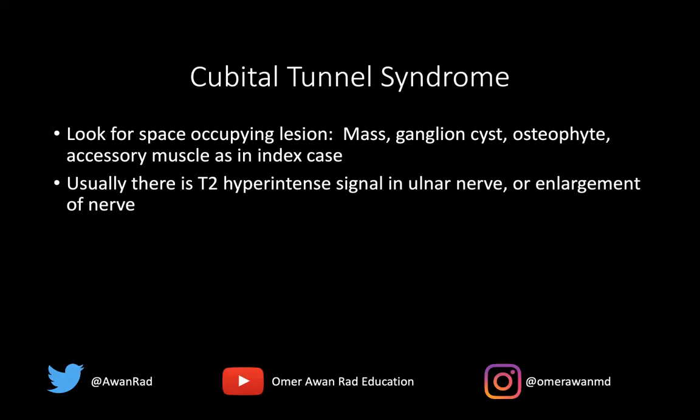There is a wide range of diagnostic possibilities for diagnosing cubital tunnel syndrome. Typically, the nerve is going to be enlarged compared to the radial nerve or the median nerve, and there will be bright signal — it'll look brighter than the other nerves in the other neurovascular bundles about the elbow. That's a nice clue or a nice way to look at it.